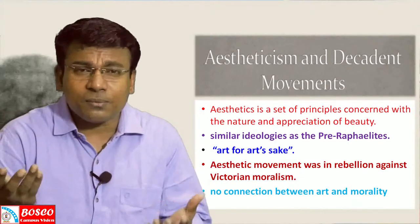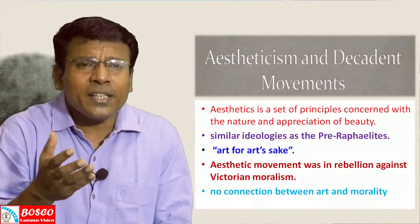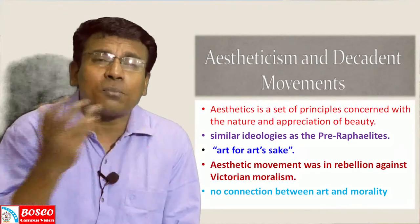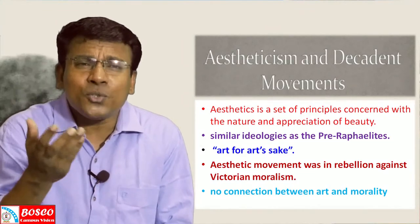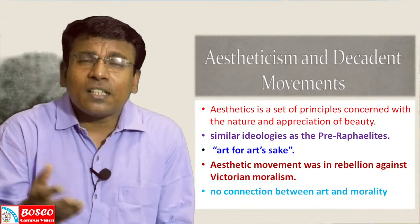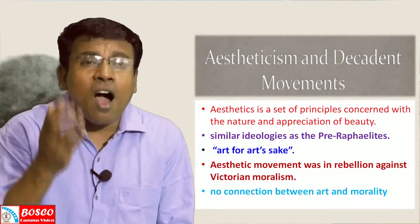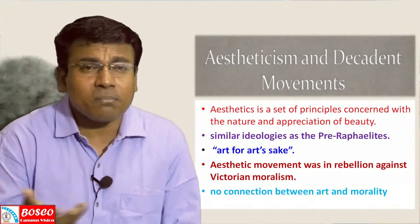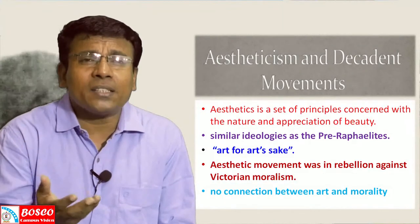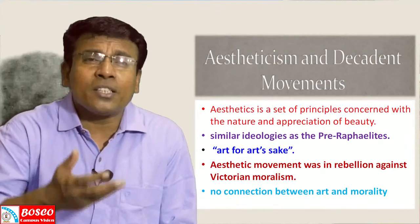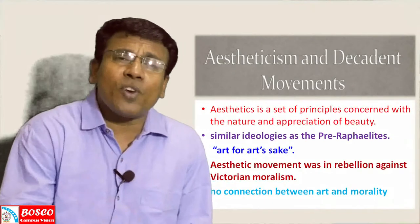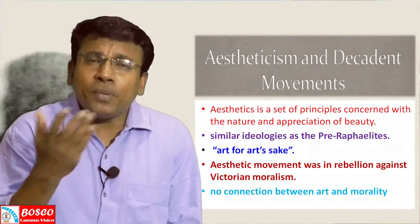The artists and writers of the Aesthetic movement asserted there was no connection between art and morality. They held the view that art should provide refined sensuous pleasure rather than conveying moral or sentimental messages. They did not accept thinkers like John Ruskin and Matthew Arnold, who had a utilitarian conception of art as something useful or moral. Most Victorians believed that literature provided models for right behaviour and prompted people to act morally in society.